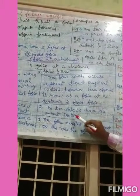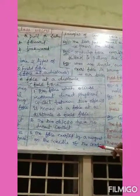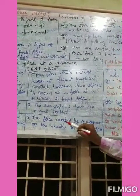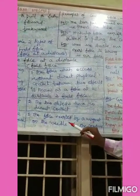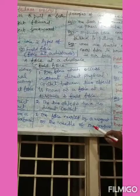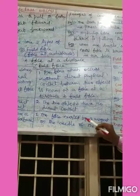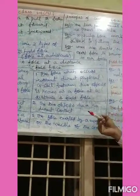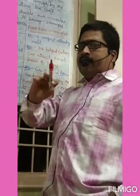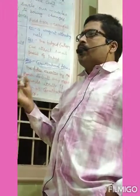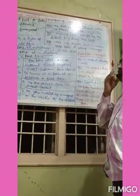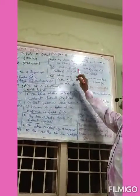And the second one is field force. The force which occurs without direct physical contact between two interacting objects is known as force at a distance or field force — meaning between the two objects there is no contact. The example for field force is the force exerted by a magnet and the needle of the compass.